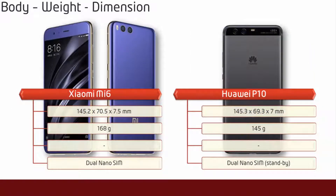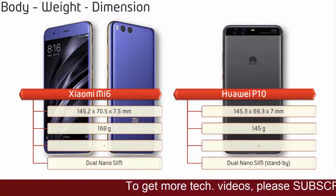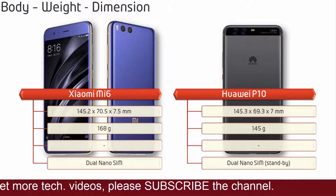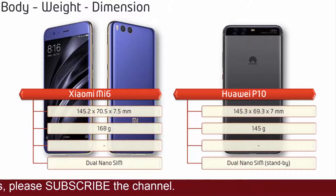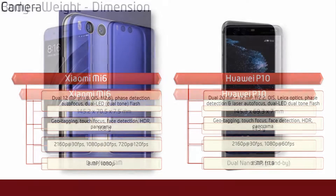If we talk about the dimensions of the Mi 6, it comes with 145.2 x 70.5 x 7.5 mm thickness and 168 grams of weight with dual nano SIM dual standby support. Whereas the P10 comes with 145.3 x 69.3 x 7 mm thickness and 145 grams of weight with single SIM or dual SIM support.